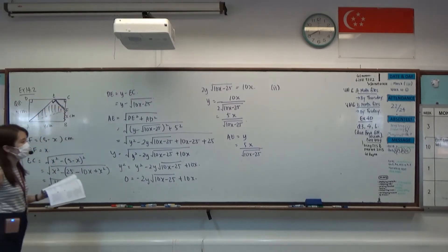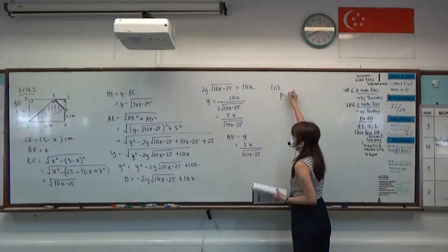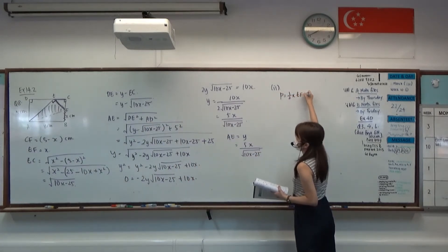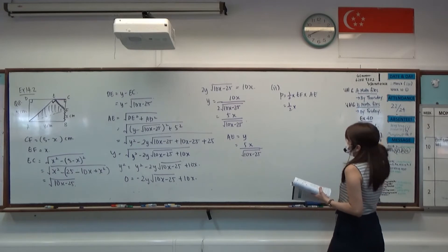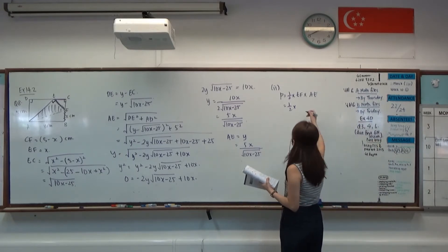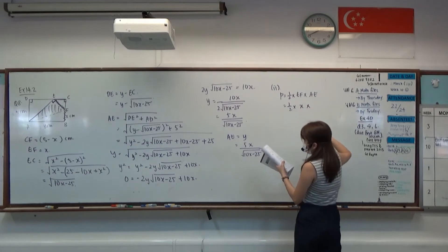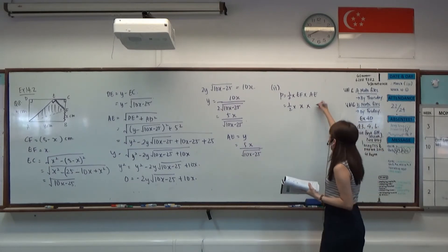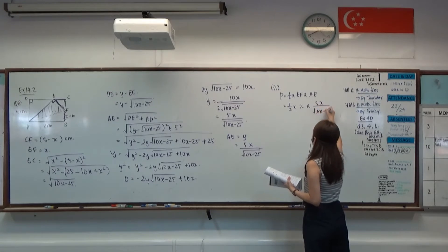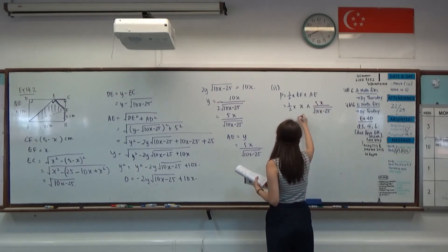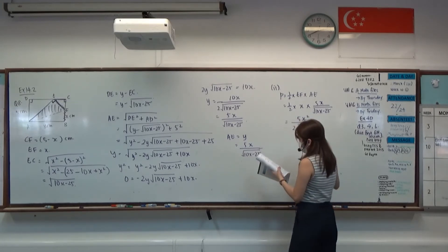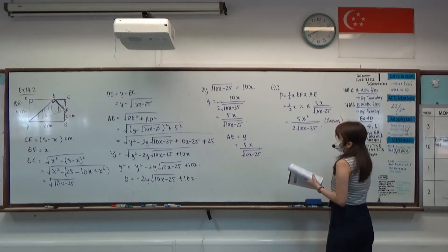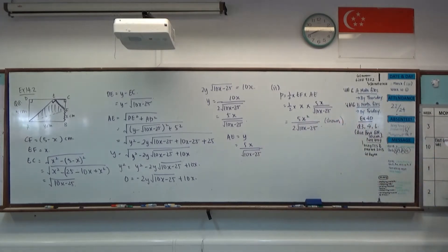Then we want to talk about the area P. So the area P itself is half times base times height. So EF would actually be our X, and our AE is this. And that will be how it's shown.